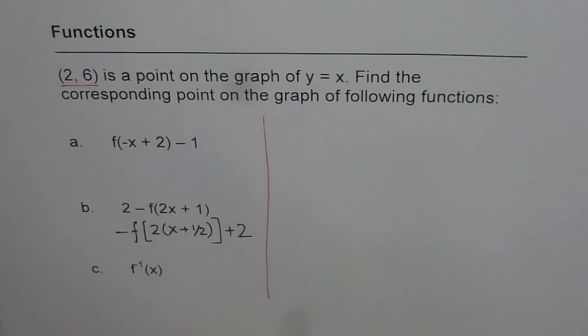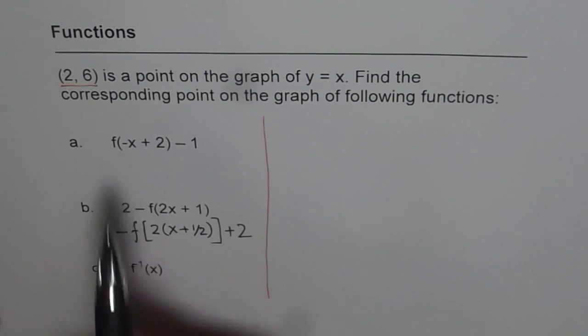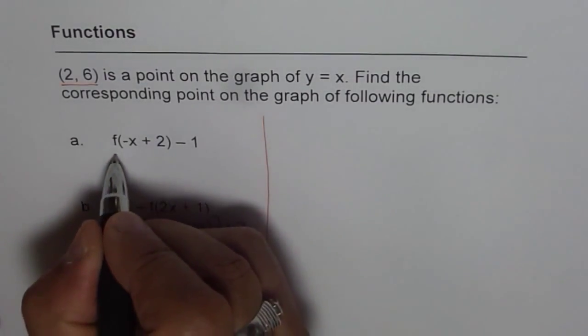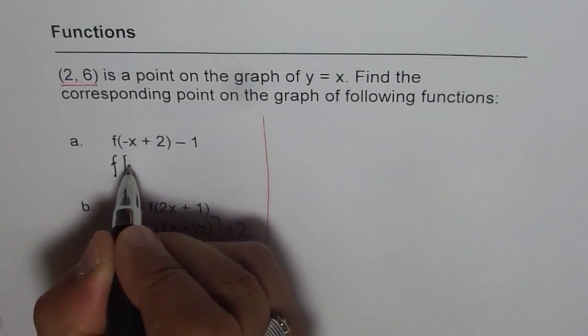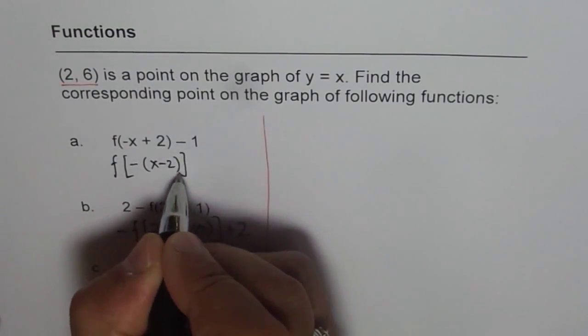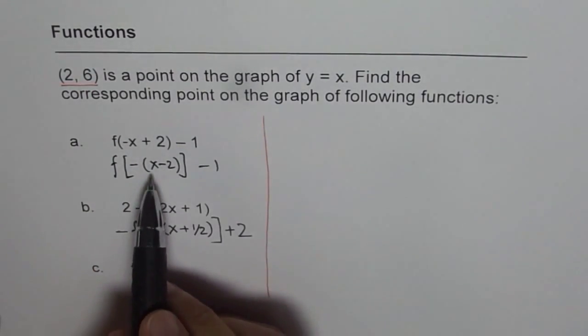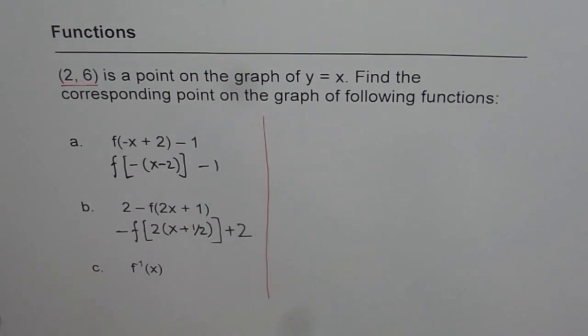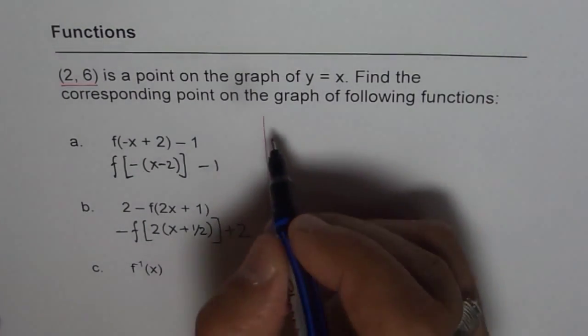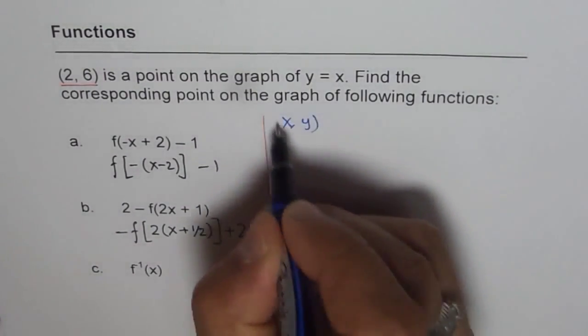Here is my solution. For the first one, we can write that function as f[−(x−2)]−1. So the x points get transformed and the transformation from the original is like this.